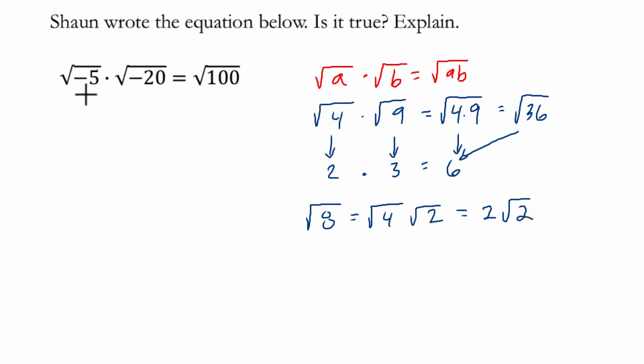But it turns out that with negative numbers, if we're multiplying 2 square roots of negative numbers, this isn't always going to make sense. So in this problem, we can see why.